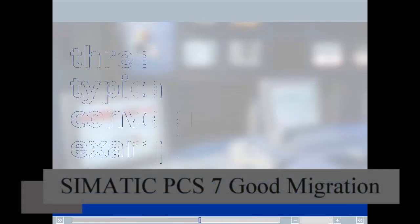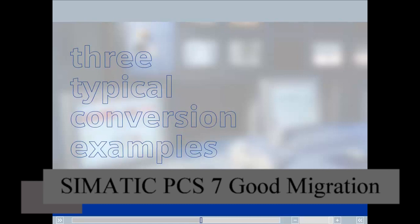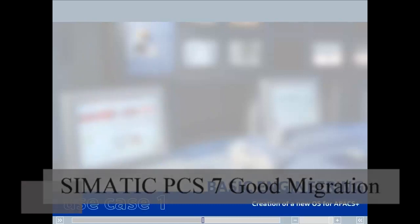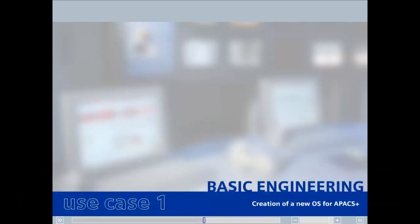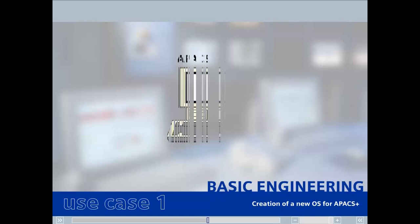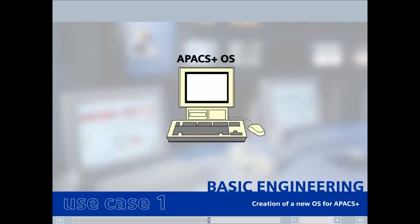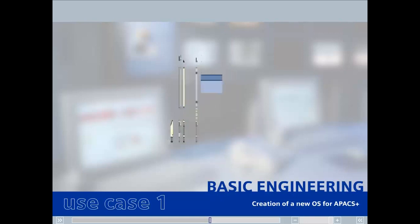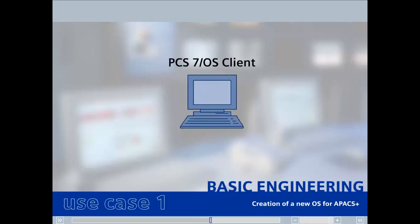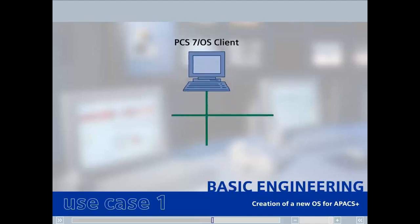This section provides three typical conversion examples. The procedure will use an Apex Plus conversion as the example, but the procedure for other systems like Infi 90 from Bailey is the same. In the first use case, the existing Apex Plus system operator station is to be replaced with a new PCS7 operator station in a client-server architecture.